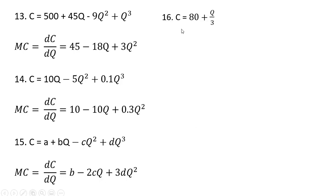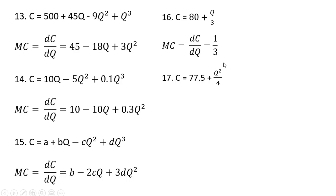A few remaining examples. C equals 80 plus q divided by 3. I just put some fractions in here — not a big deal. The marginal cost is just going to be 1 third. Here's another example. Bring down the 2 in front, subtract 1 from the exponent, and then simplifying, just left with 1 half q.